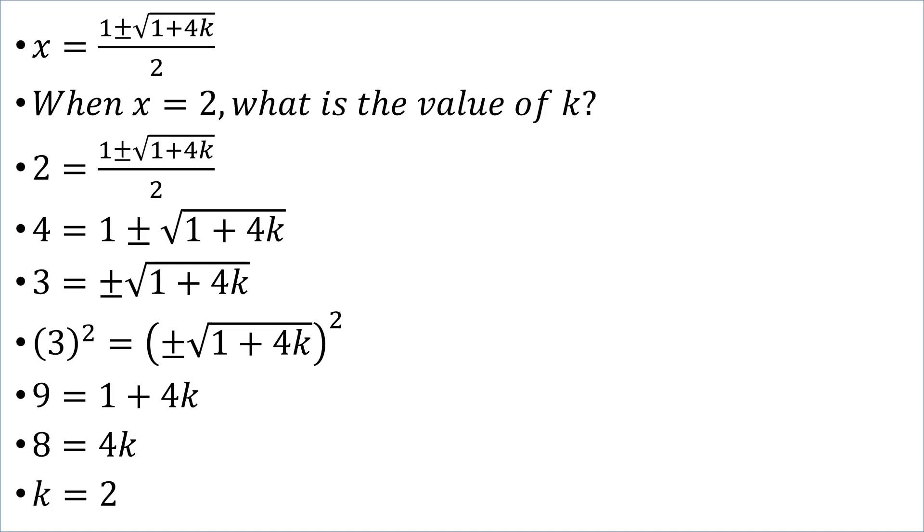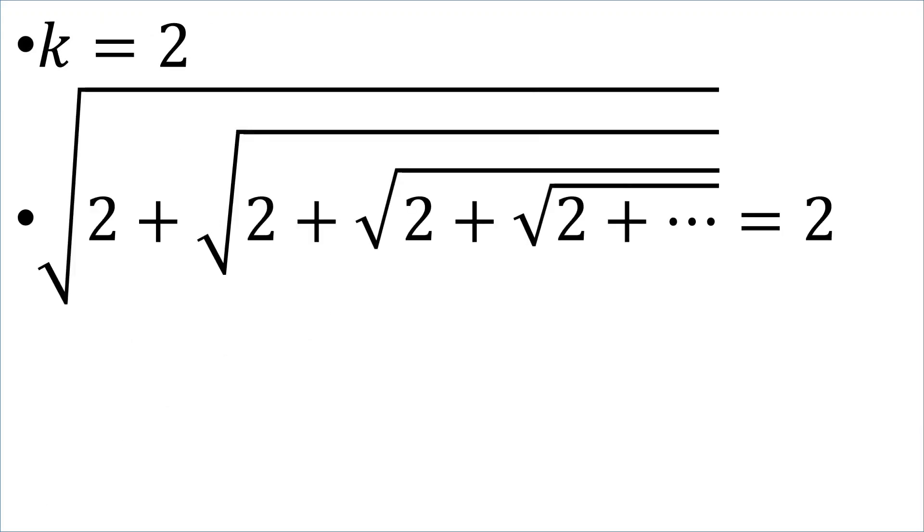Which means that the square root of 2 plus 2 plus 2 plus 2 and so on and so forth is equal to 2. That infinite nested radical simply works out to exactly 2.